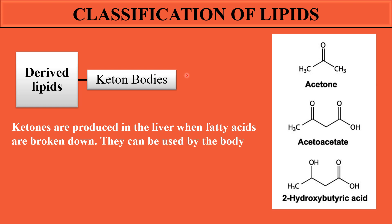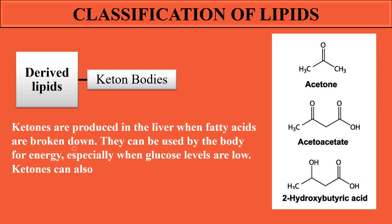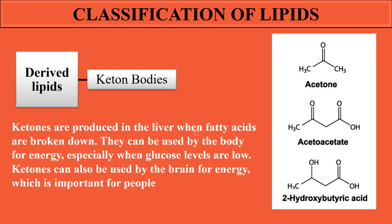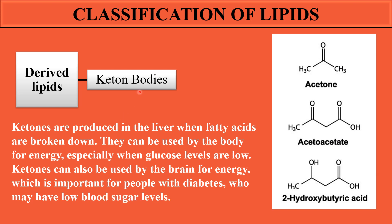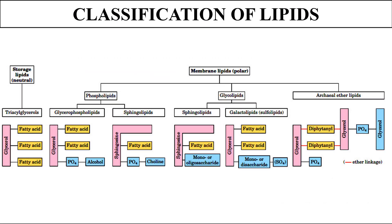Ketone bodies are also derivatives of lipids, obtained in the liver when fatty acids are broken down. When ketone bodies are derived from fatty acids, they are used for energy purposes. When glucose levels in the body are low, ketone bodies are obtained by the breakdown of fatty acids and utilized as energy for the brain. This is most commonly seen in diabetic patients with low blood sugar levels. Ketone bodies exist in three forms: acetone, acetoacetate, and beta-hydroxybutyric acid.